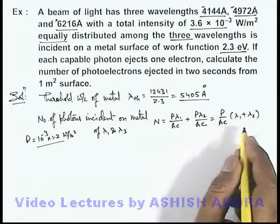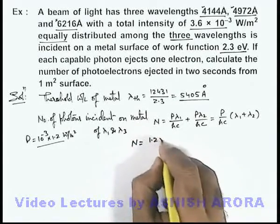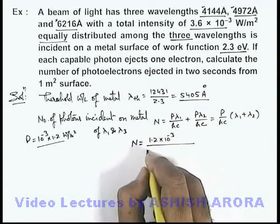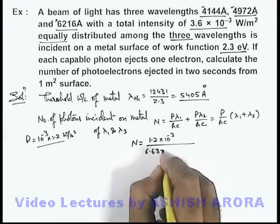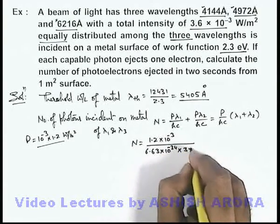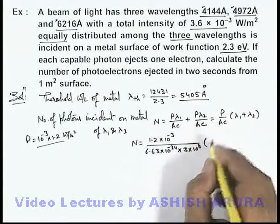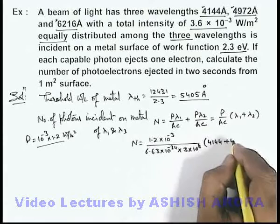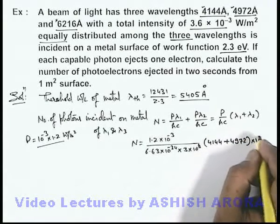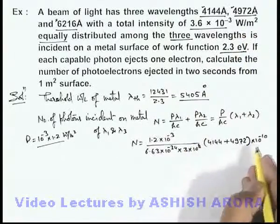Substituting the values, the number of photons incident is: 1.2 × 10⁻³ divided by (6.63 × 10⁻³⁴ × 3 × 10⁸), multiplied by (4144 + 4972) × 10⁻¹⁰. Here we have converted angstrom to meters.